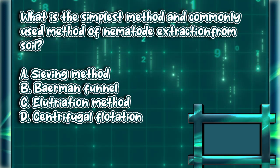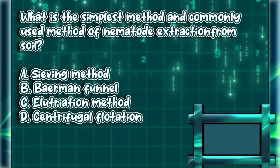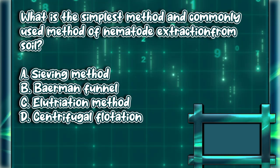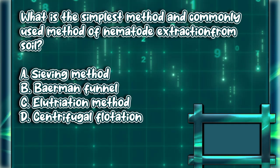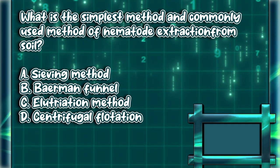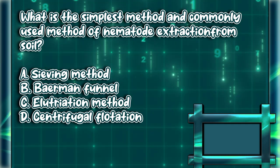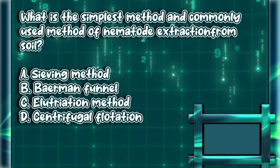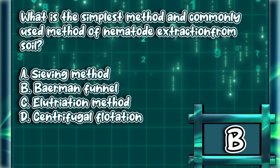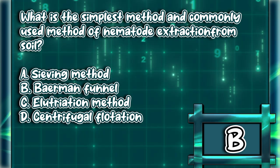What is the simplest and most commonly used method of nematode extraction from soil? A) Sieving method, B) Baermann funnel, C) Elutriation method, D) Centrifugal flotation. The answer is letter B.